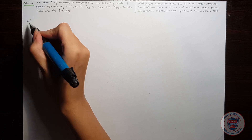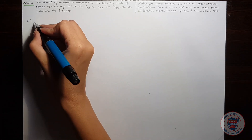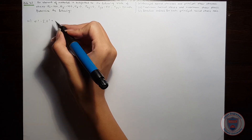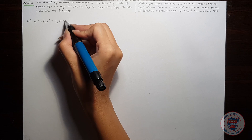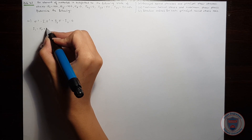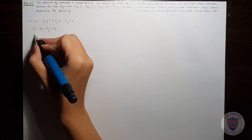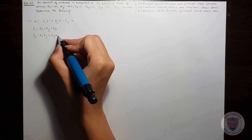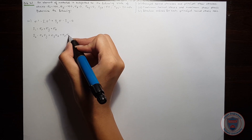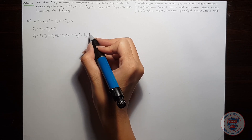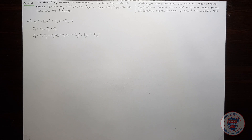To find the principal normal stresses, we will use the equation sigma cubed minus I1 times sigma squared plus I2 times sigma minus I3 equals zero. We know that I1 is equal to sigma_x plus sigma_y plus sigma_z. I2 is equal to sigma_x times sigma_y plus sigma_y times sigma_z plus sigma_z times sigma_x minus tau_xy squared minus tau_yz squared minus tau_zx squared.